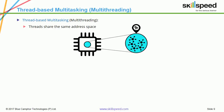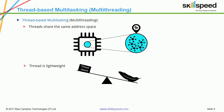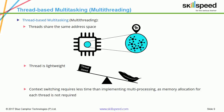Let us now look at thread-based multi-tasking. Threads share the same address space, as against processes which have separate addresses. A thread is a lightweight thing compared with a process which is heavyweight. Context switching requires less time in threads than in multi-processing, as memory allocation for each thread is not required. Note that at least one process is required for each thread to run.